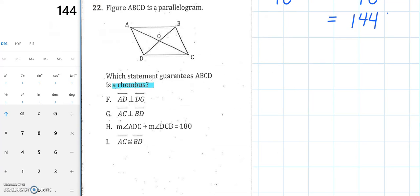The first one, F, says AD, which is this left side, is perpendicular to the bottom DC. Well, if this is perpendicular to the bottom, that means there's a right angle there at D. Well, that's not gonna work. That would prove it's a rectangle, but that wouldn't prove that it's a rhombus. So it's not going to be choice F.